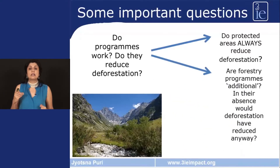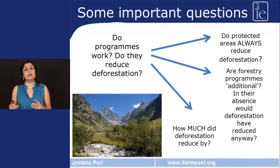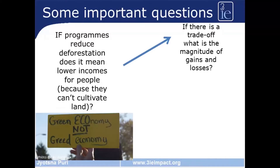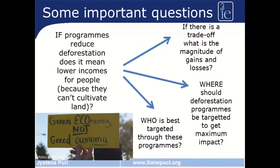Are forestry programs additional? That is, had they not occurred, would deforestation have been reduced anyway? And third, how much did deforestation actually reduce by? These impact evaluations can also help answer other questions: if programs are reducing deforestation, does it mean lower incomes for people because they are being prevented from clearing land? What is the magnitude of this trade-off? Where should deforestation programs be targeted to get maximum impact, and who should be targeted so that we get the best return for our investment? These are all important questions for policymakers.